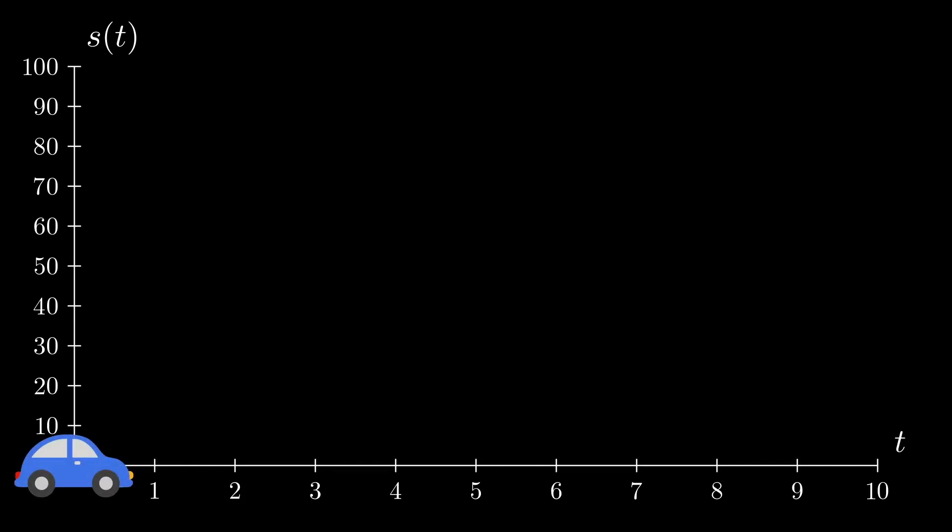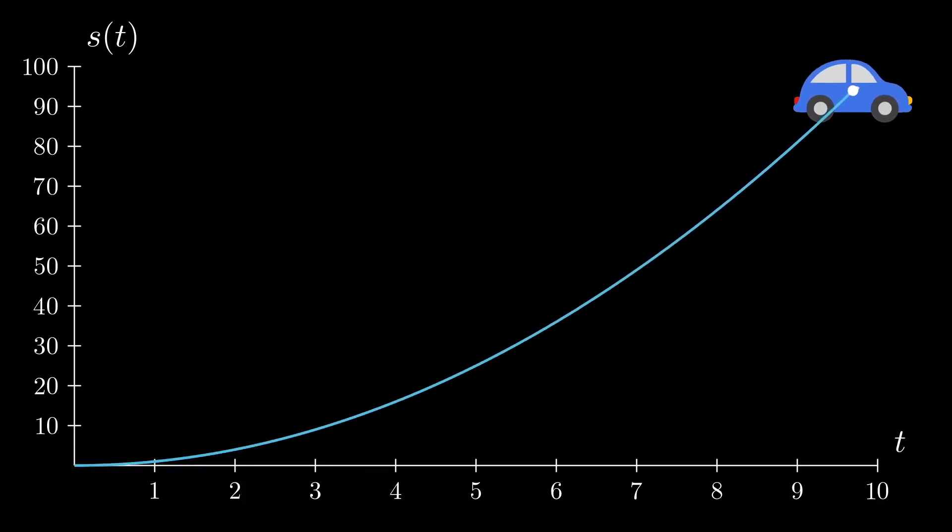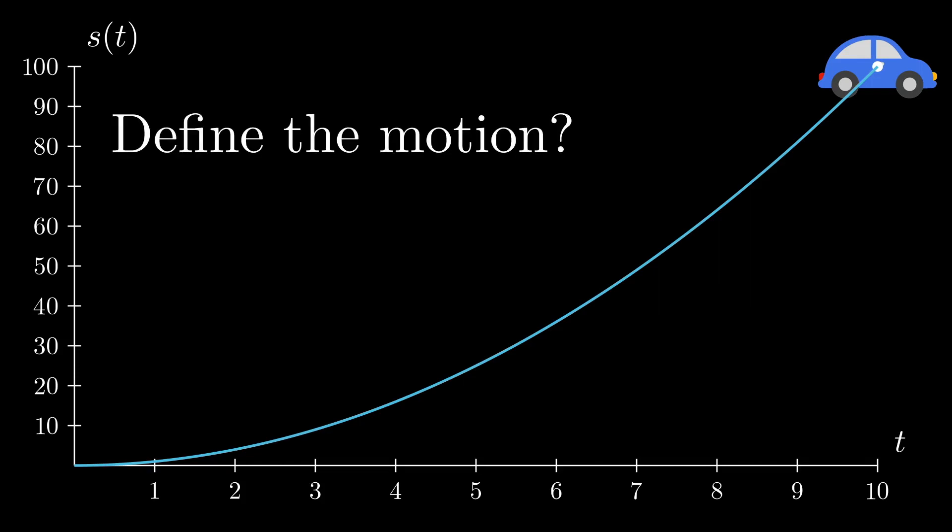The function representing this motion can be summed into an ST diagram. The question I want to ask you now is how can we define from looking at the ST diagram if the motion of the car is continuous, accelerated, and if it is, is it a constant acceleration?